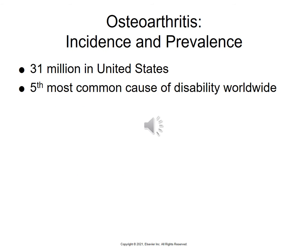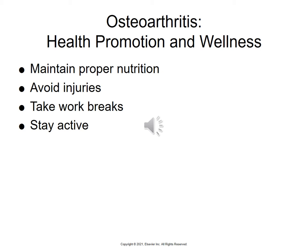Osteoarthritis is the fifth most common cause of disability worldwide, and there are 31 million people in the United States affected by it. For health promotion and wellness: maintain proper nutrition, avoid injury, take work breaks, and stay active — move it or lose it.